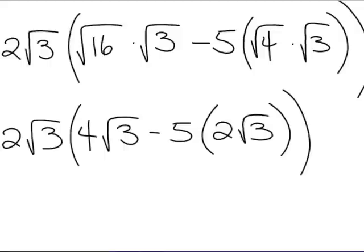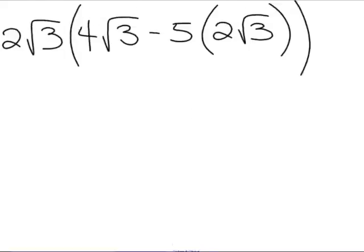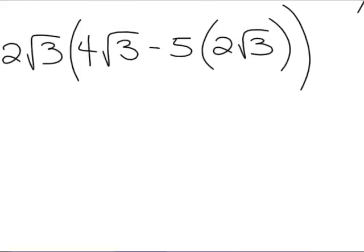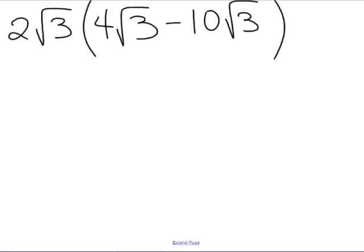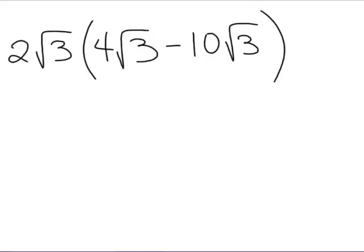Pretty good. Let's distribute 5 to the 2 root 3 at this point. So now we have 2 root 3 times 4 root 3 minus 10 root 3. And 4 root 3 minus 10 root 3, well, we can think of this as 4x minus 10x. Well, 4x minus 10x, that's negative 6x. Likewise, 4 root 3 minus 10 root 3, that's negative 6 root 3.